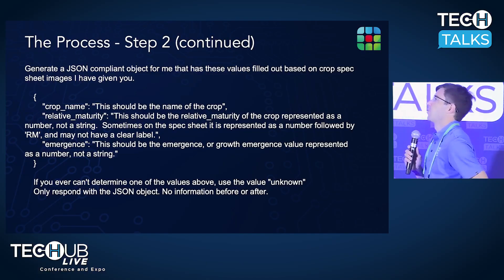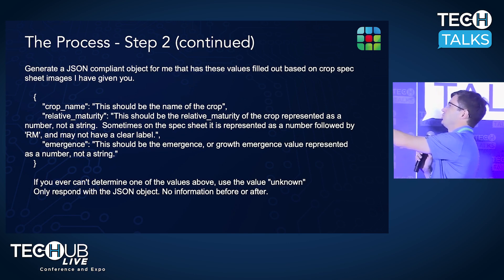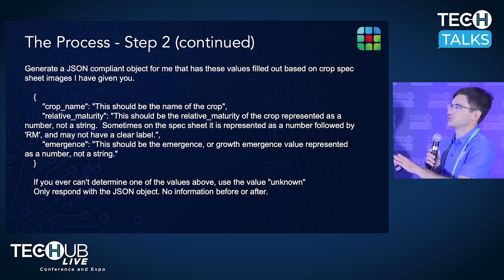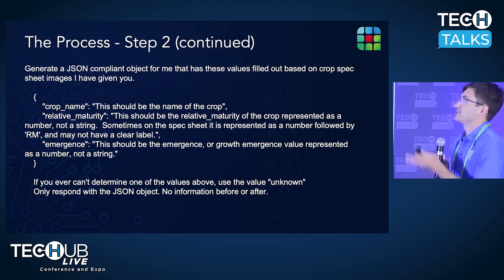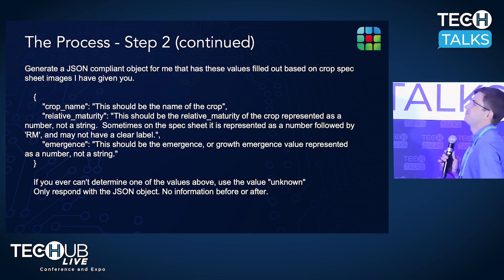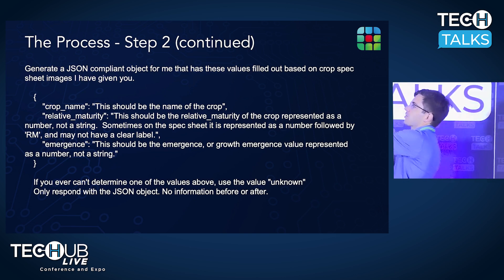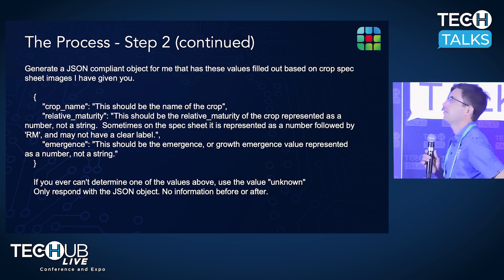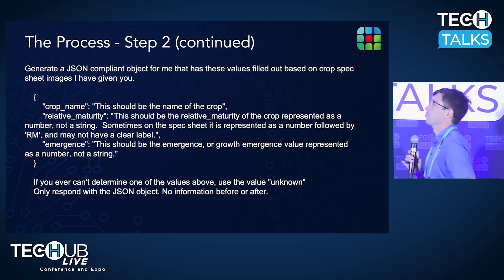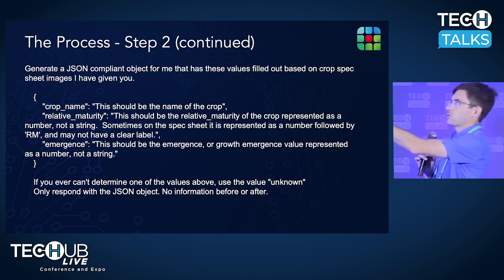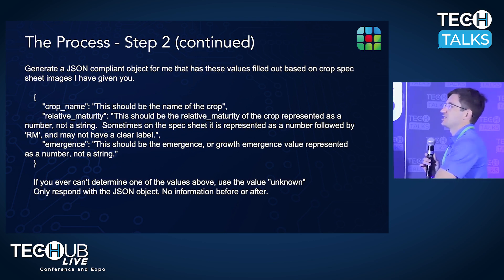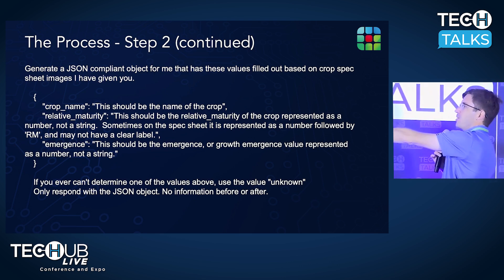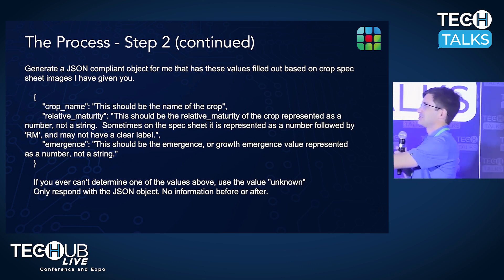Here's an exploded view of that prompt. We tell the large language model: generate a JSON-compliant object with these values filled in based on crop spec sheet images I've given you. The template includes crop name — the name of the crop; relative maturity — represented as a number, not a string, sometimes shown as a number followed by RRM; and emergence — the growth emergence value as a number, not a string. I'm describing this in a very human-friendly way. At the bottom, the get-out-of-jail-free card: if you can't determine one of the values, use 'unknown.' Only respond with the JSON object — no information before or after. I don't want any extra content, just data.